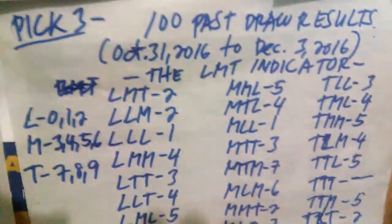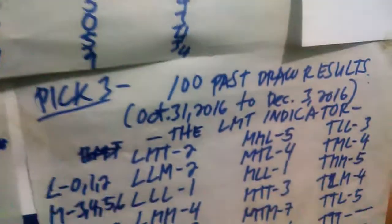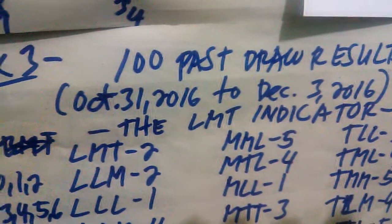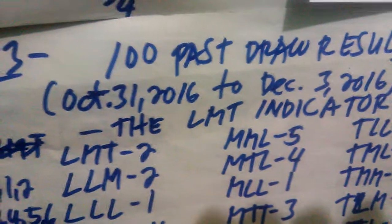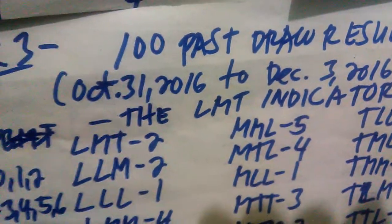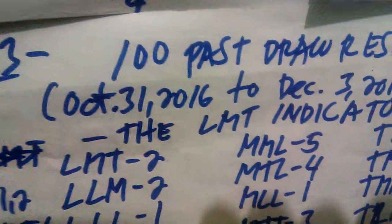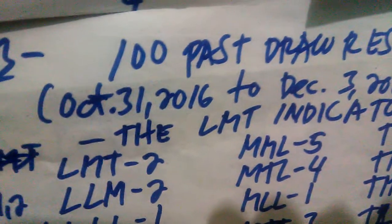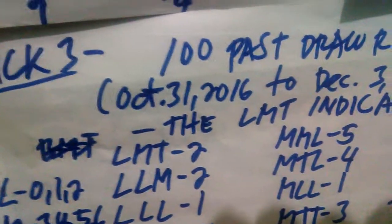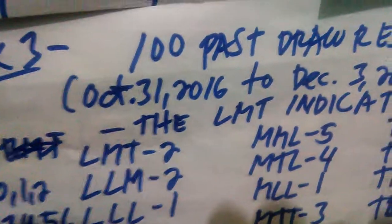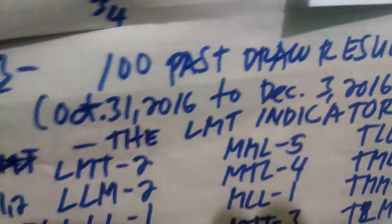For Pick 3, on the screen is the actual draw results here in the Philippines from October 31, 2016 to December 3, 2016. In the Philippines we have 3 draws of Pick 3 every day: the 11am, the 4pm, and the 9pm draws. What we are going to do is retrieve these 100 past draw results and tally them.